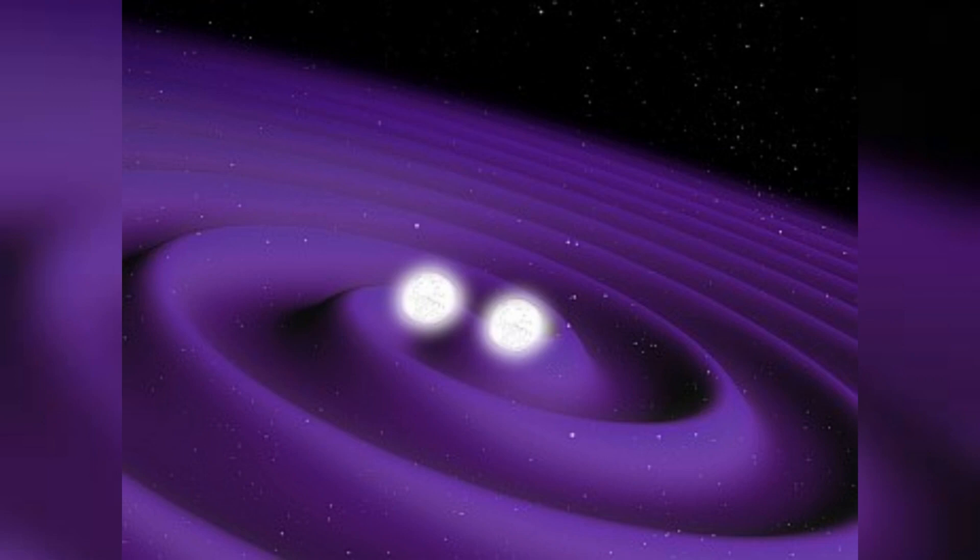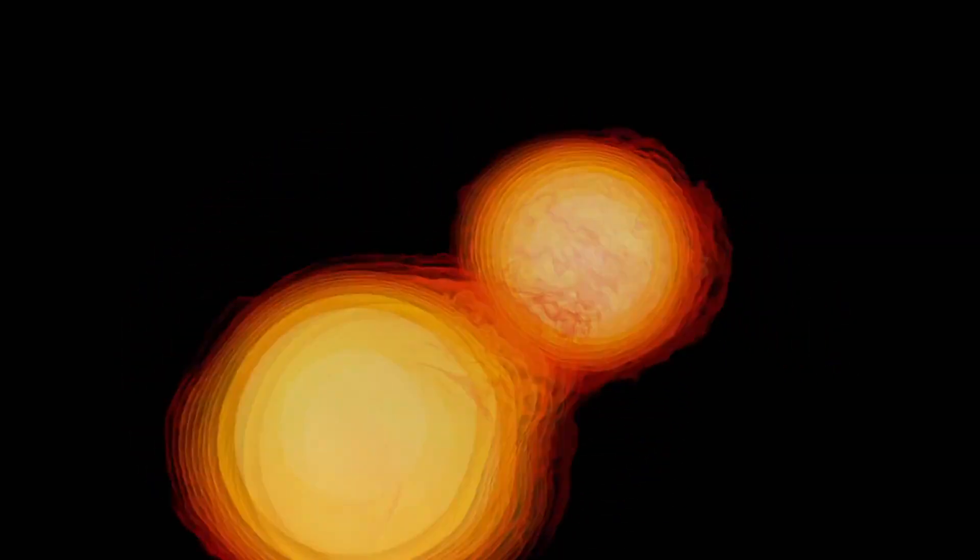Then there are the binary neutron stars, the power couples of the celestial world. When two neutron stars are in a close orbit, they dance around each other, speeding up over time as they lose energy in the form of gravitational waves. It's like watching the universe's most intense tango, where the dancers eventually merge in a spectacular collision.